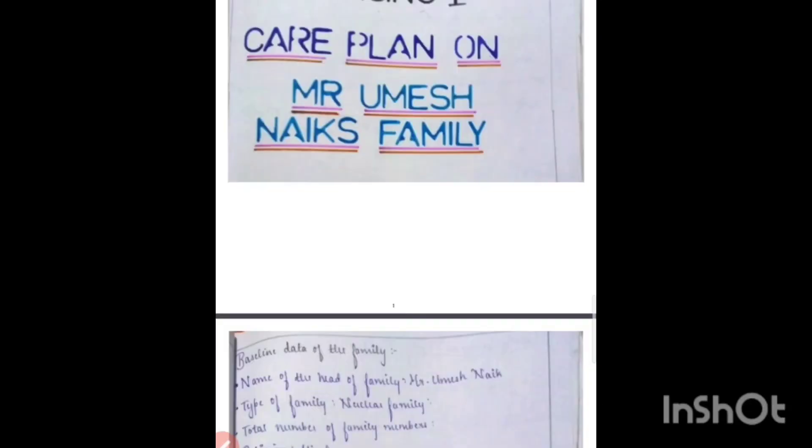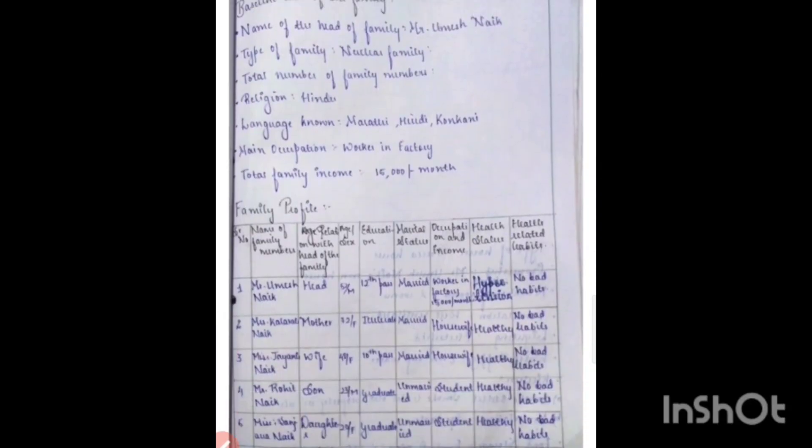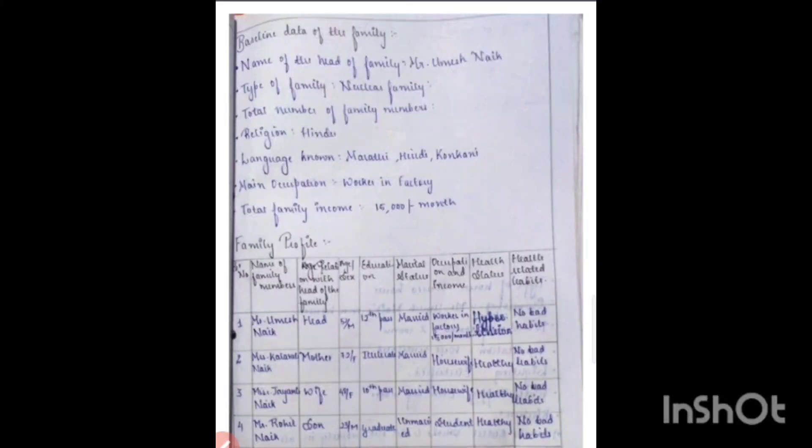First, we have to mention the baseline data of the family, wherein we have to write the name of the family, then the type of family — whether it is nuclear or joint — then the total number of family members, how many there are, their religion, the language they know, and their main occupation.